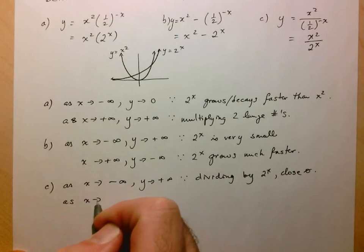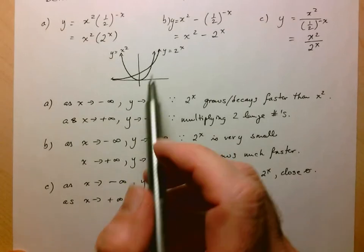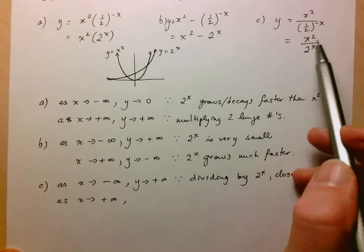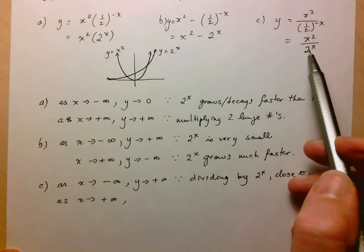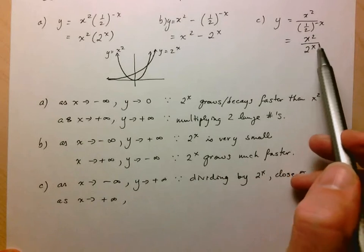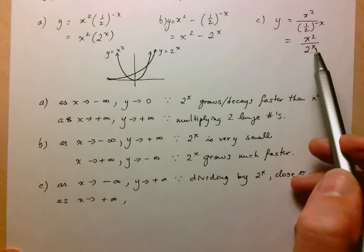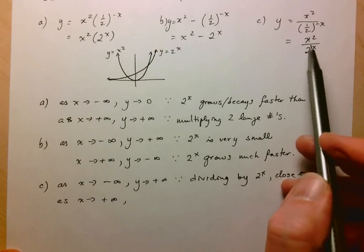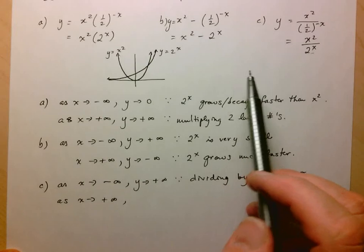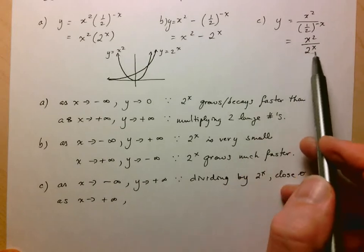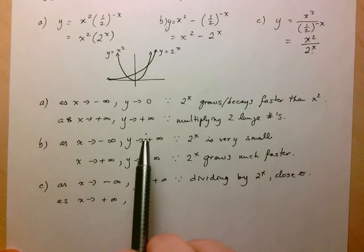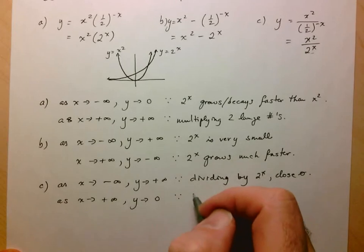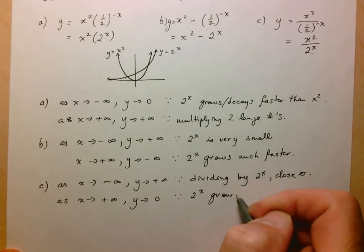As x approaches positive infinity, they're both getting very large, but while x squared is getting very large, 2 to the x is getting larger much, much faster, so the denominator is going to take over. This is very similar to what we saw with rational functions — like if this were x cubed, we know x cubed takes over from x squared and approaches zero. 2 to the x grows even faster than x cubed, so here y is going to be approaching zero since 2 to the x grows much faster.